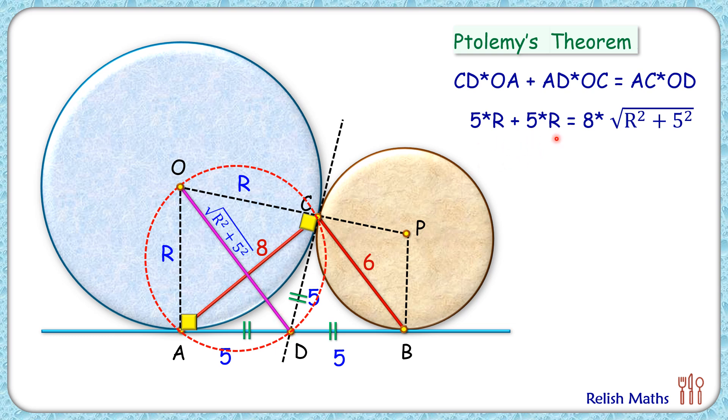So simplifying this, we get 10 times R is 8 times this. Both sides dividing by 2, we get 5 times R equals 4 times square root of R square plus 5 square.